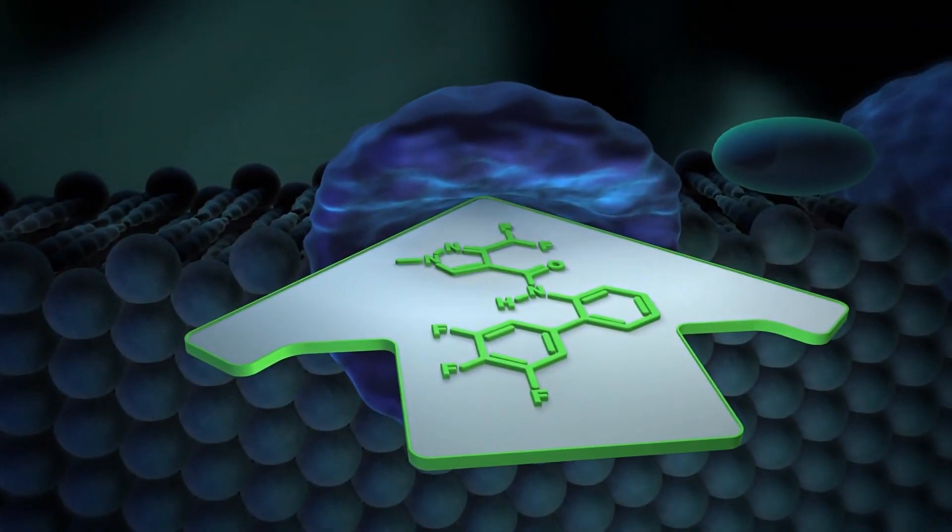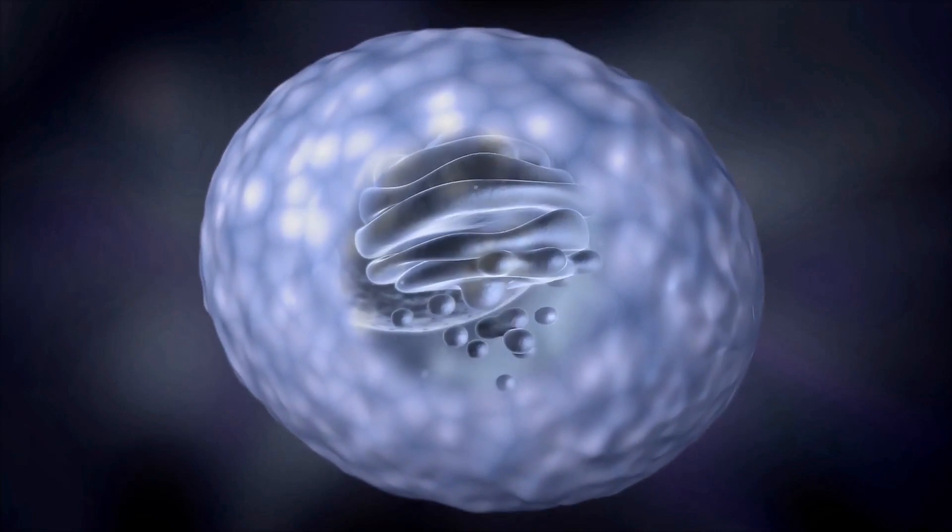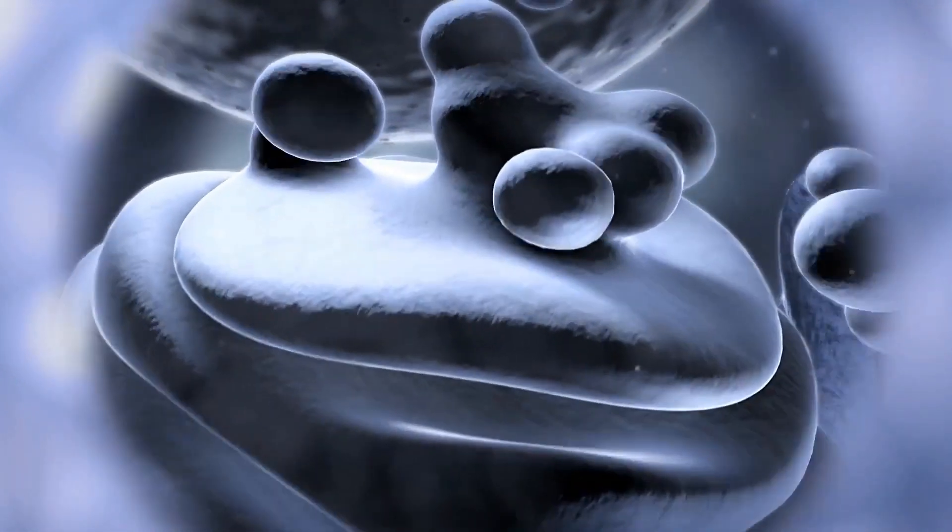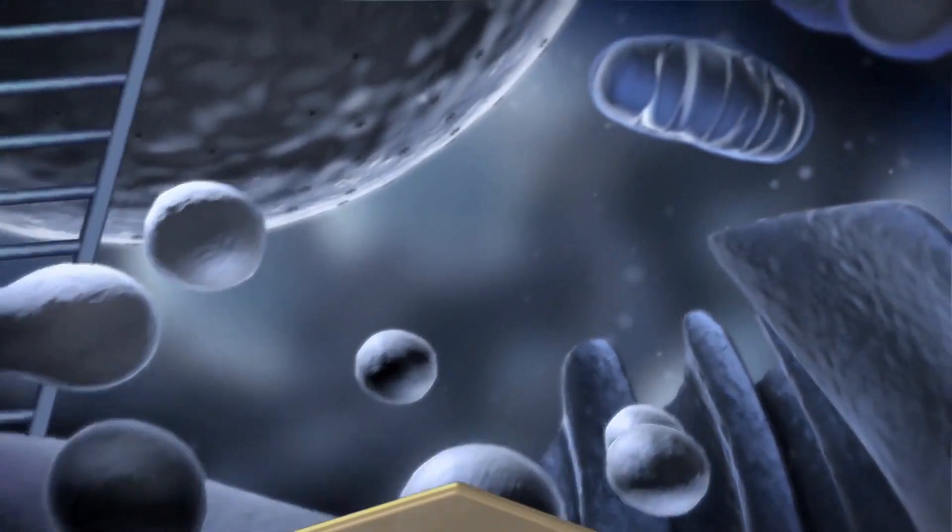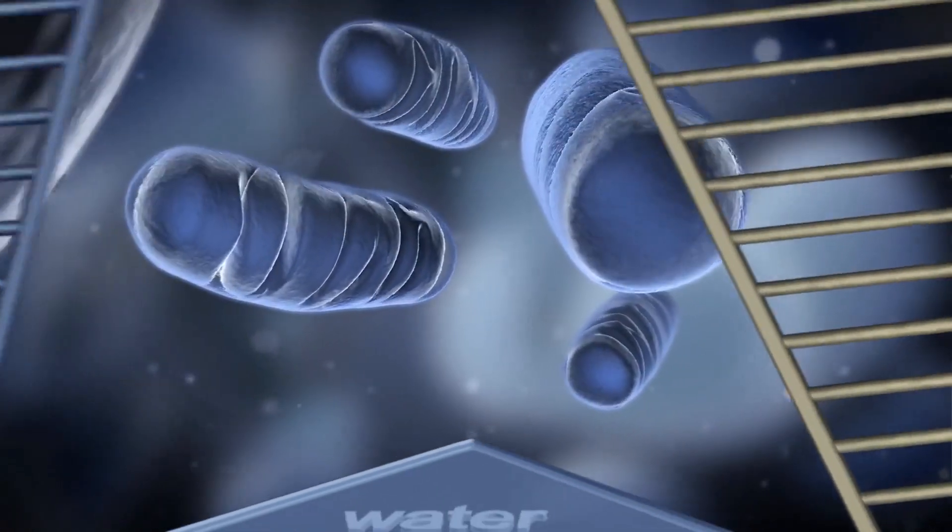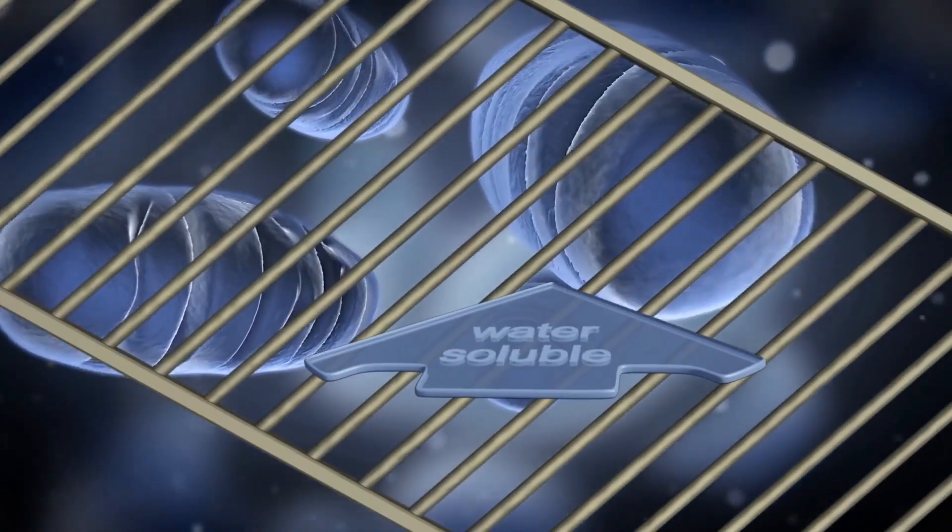In order to reach the target enzyme deep in the interior of the fungal cell, the active ingredient first has to overcome numerous membrane barriers. Some of them are only slightly permeable to fat-soluble molecules. Others form a barrier to water-soluble molecules.